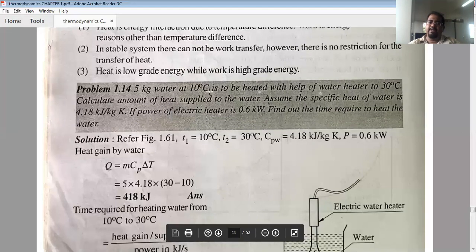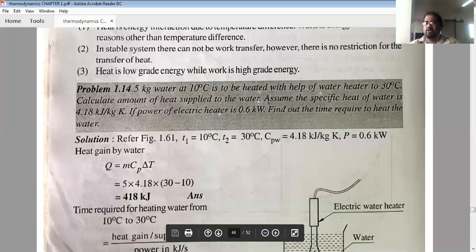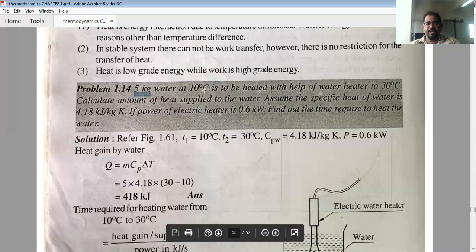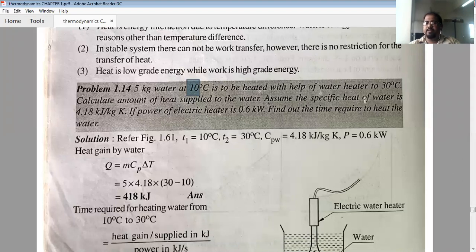Question is: 5 kg water at 10 degree Celsius is to be heated with the help of water heater at 30 degree Celsius. Calculate amount of heat supplied to the water. How much heat supply is happening? We will know. So I will remember the basic equation: Q equals m Cp delta T. You have m value 5 kg, Cp value 4.18 universal, and delta T is 30 minus 10 degree Celsius. So this formula is 5 into 4.18 into 30 minus 10. You have to complete it. Assume the specific heat of water is 4.18 kJ per kg K.